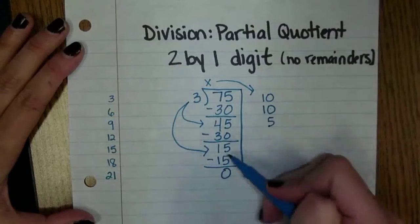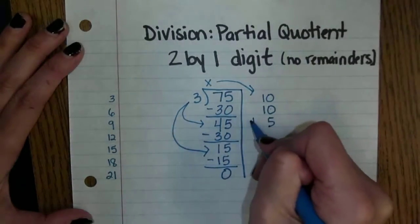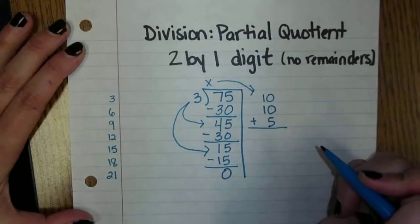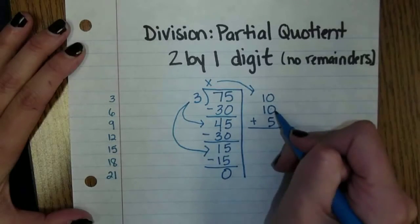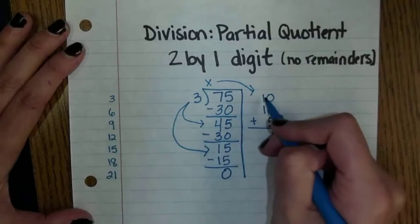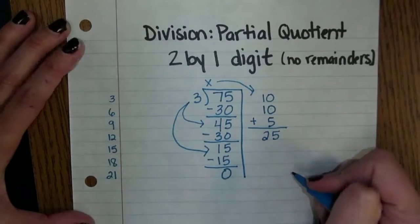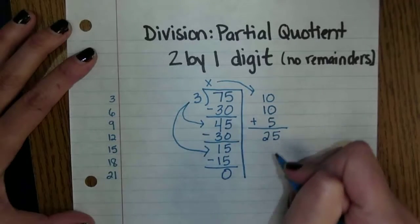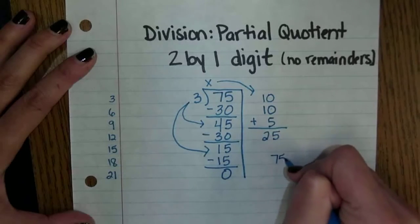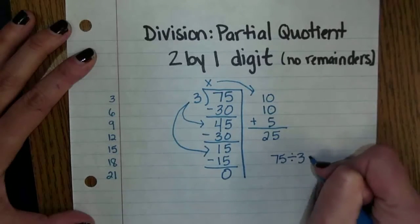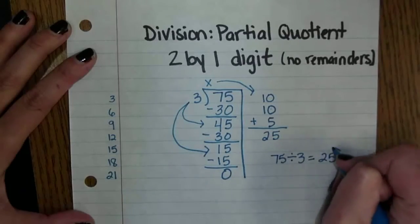Now I know this does not look like an answer to our problem but we're not done yet. We need to take everything we have over here and add it together. We're going to take 0 plus 0 plus 5 which would be 5 and we're going to take 1 plus 1 which would be 2. So my problem would be 75 divided by 3 gives us an answer of 25.